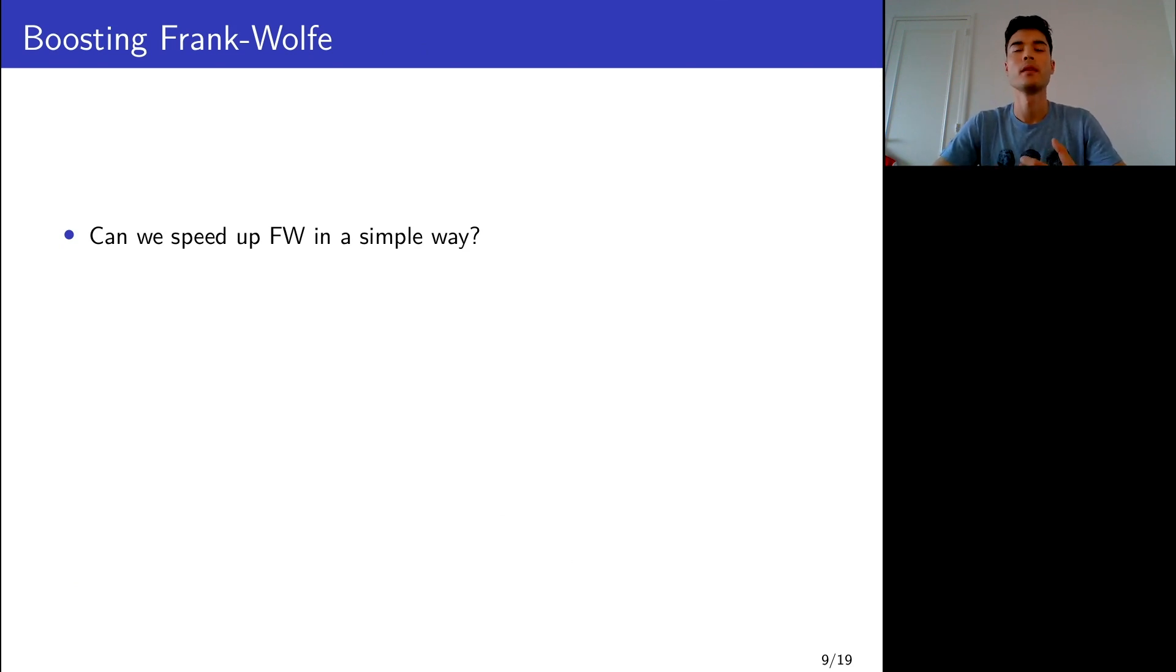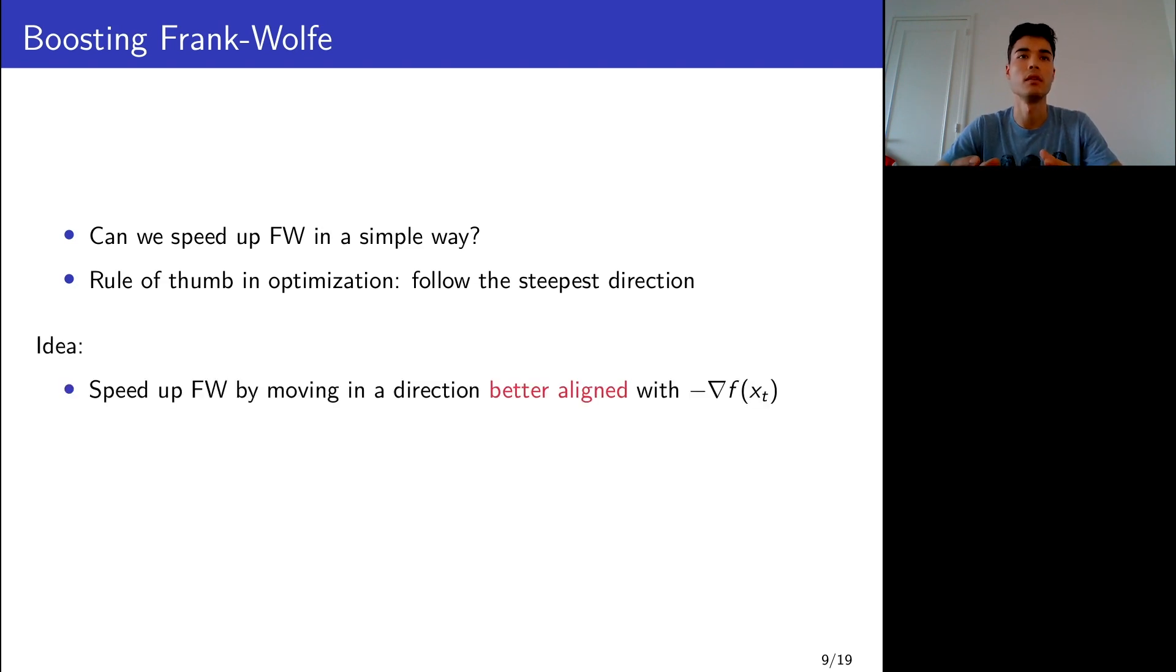If we come back to our fundamental problem, can we speed up Frank-Wolfe in a simple way, perhaps in a simpler way? We have the following rule of thumb in optimization: follow the steepest direction. Can we achieve the same thing for Frank-Wolfe? This is the idea behind the Boosting Frank-Wolfe algorithm: to move in directions that are better aligned with the negative gradient, and not just directions given by the vertices. Note here that we only seek to better align the direction, not to follow the exact direction of the negative gradient. Of course, we want our algorithm to stay projection-free, so we need to estimate this new direction in a smart way, and in our case, it is by using vertices. This will ensure that the new iterate is feasible.